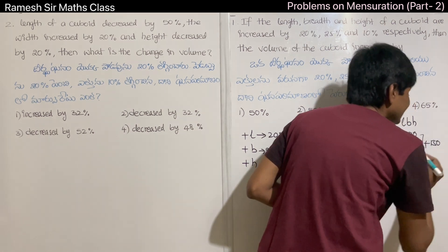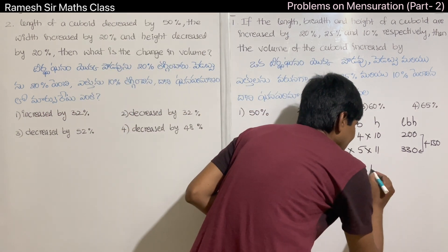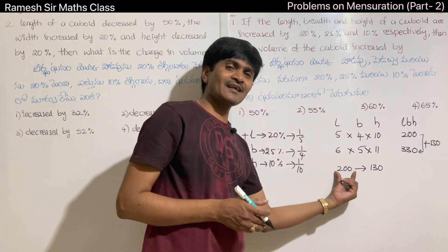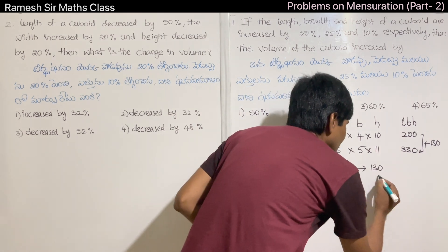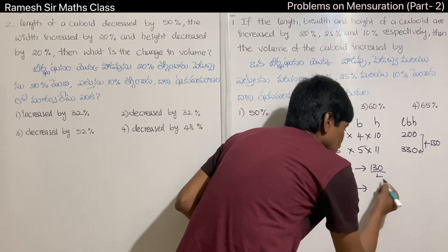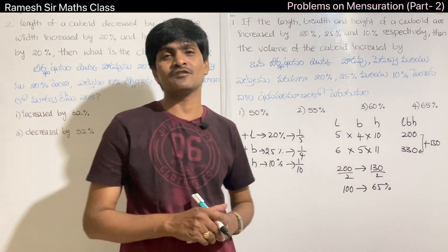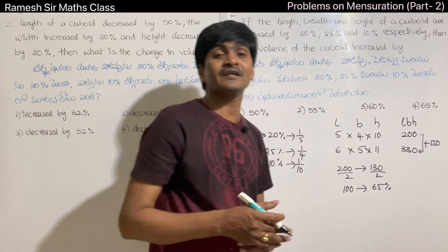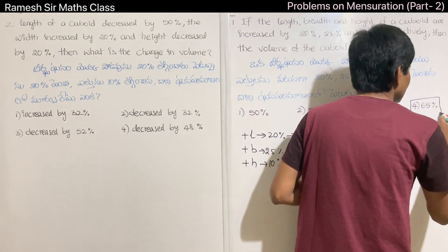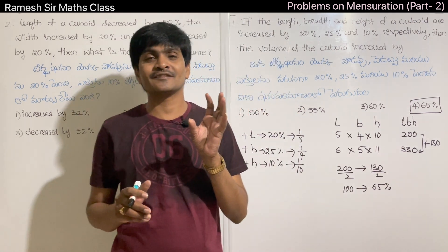The increase is 330 minus 200 = 130 units increase. The fourth option is the correct one. If you look at mensuration — 2D figures and 3D figures — you can see the formulas for areas, volumes, and so on.